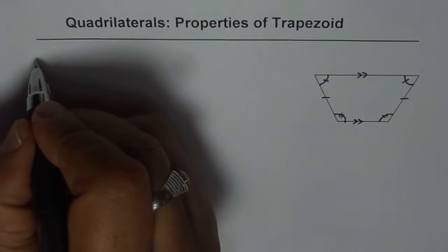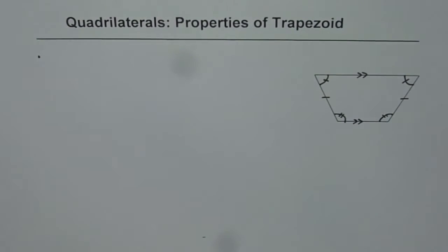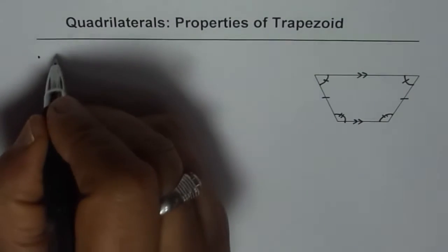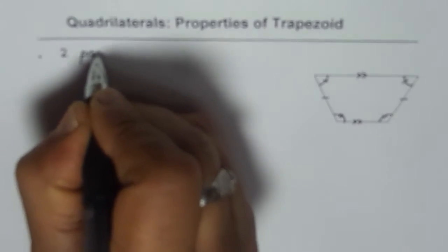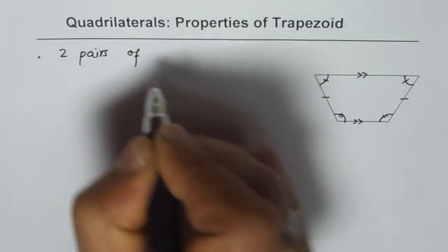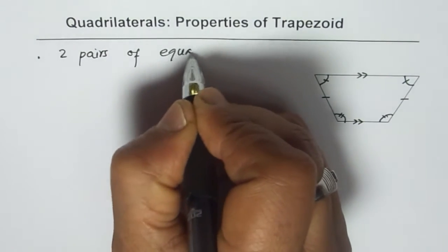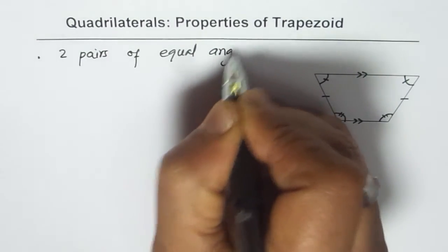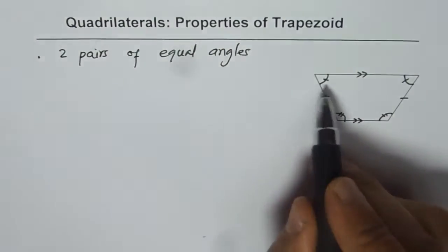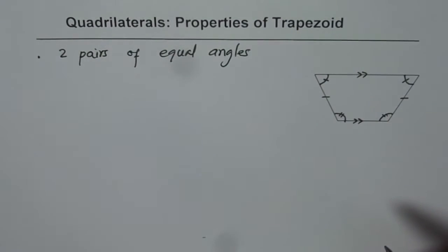Now let's list all the characteristics of trapezoid. It has two pairs of equal angles. Now that is very special and these two are on the same side, so be careful about that.